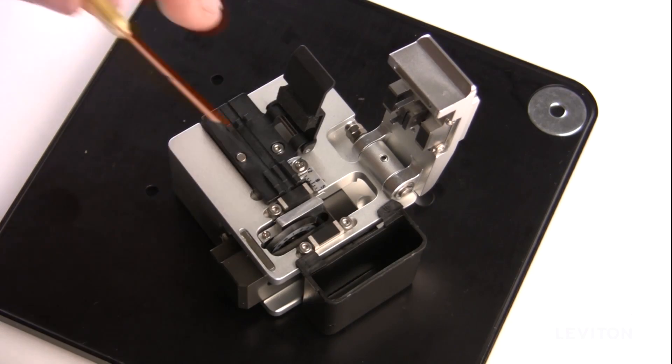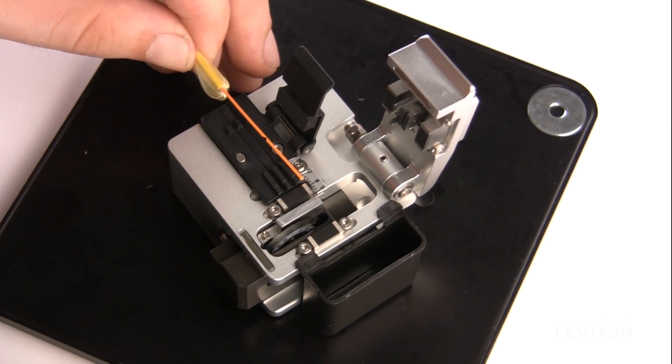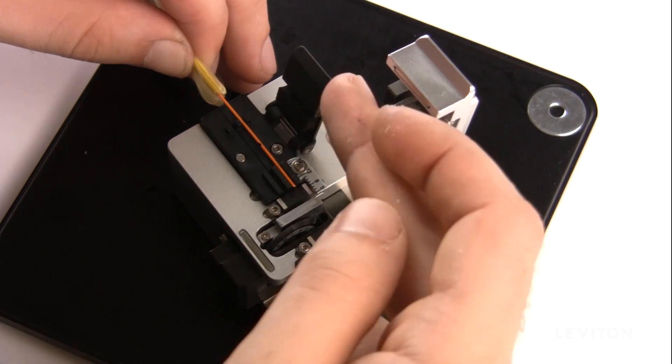Cleave the stripped fiber. Make sure the fiber's edge is at the 10.5 millimeter position on the cleaver.